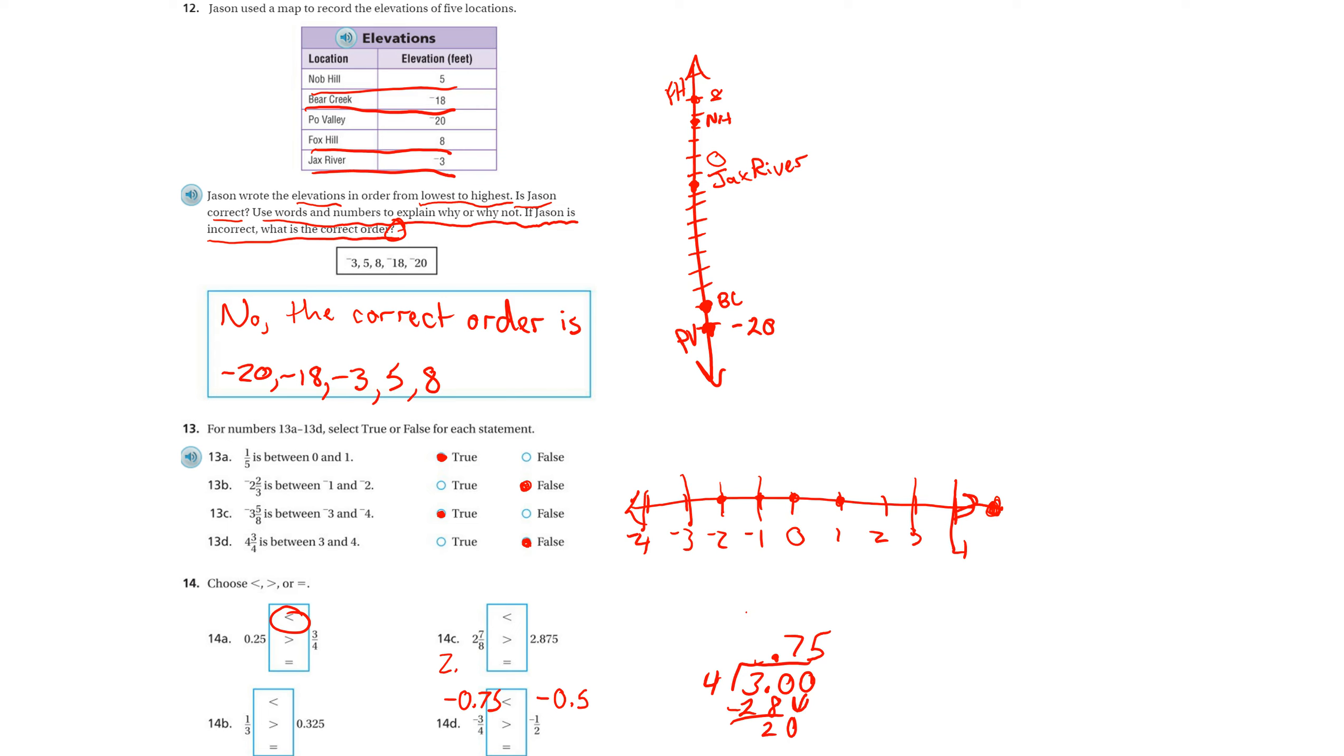For this, I want to look at my number line because we're dealing with negatives, which can be confusing. Here's negative one. Halfway to negative one would be right about here. And then three-fourths of the way, or 0.75, would be right about here. So negative 0.5 is actually closer to zero or further to the right, so it is actually the larger number here. When you're dealing with two negatives, it's better to put it on a number line because then you can see it more clearly.